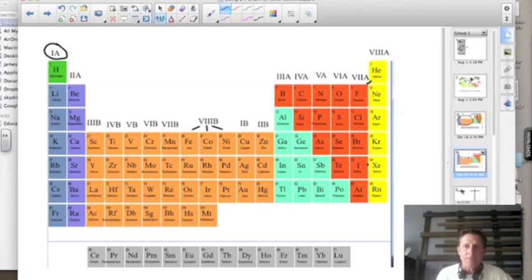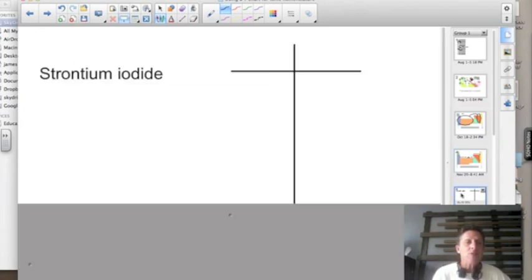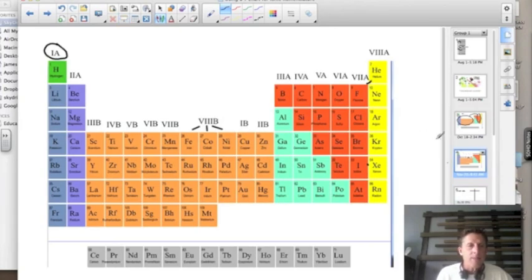Let's take a look at one example. Here I have strontium iodide. I want to know the correct ratio of the elements. Let's find strontium first on our periodic table. Strontium is in roman numeral two, that column. That means strontium has an oxidation number of two, and it's going to be a plus two oxidation number.